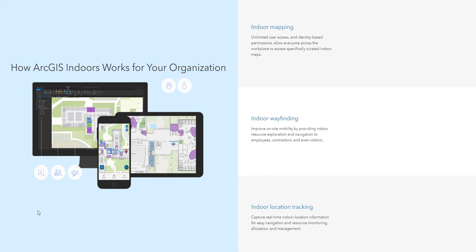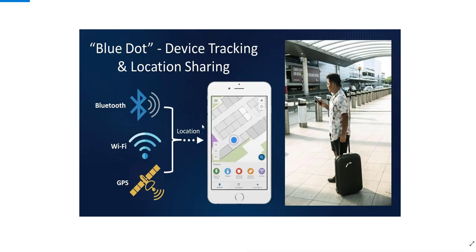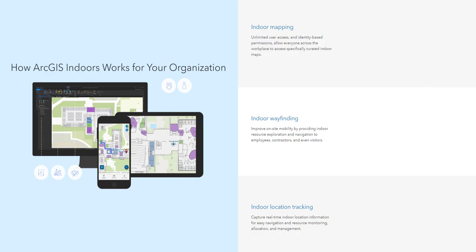You build your indoor mapping from your Revit model in CAD and enable indoor wayfinding, which can then connect to your indoor positioning system, allowing you to do location tracking. As you can see here, an individual is connected to Bluetooth, Wi-Fi, and GPS on their mobile device, which enables the blue dot — allowing them to navigate from one place to another in both interior and exterior space.